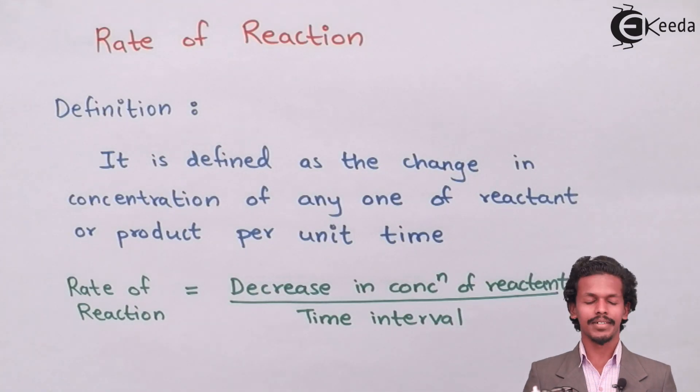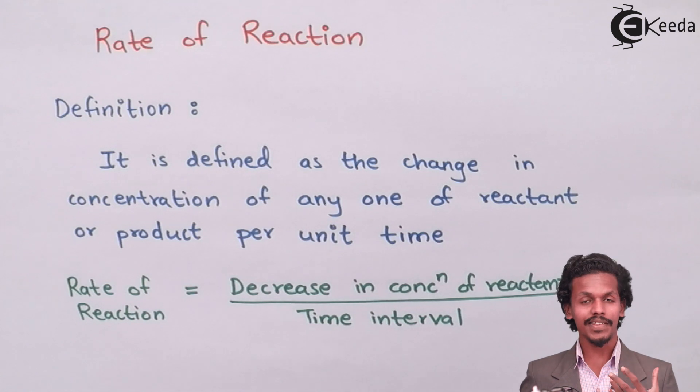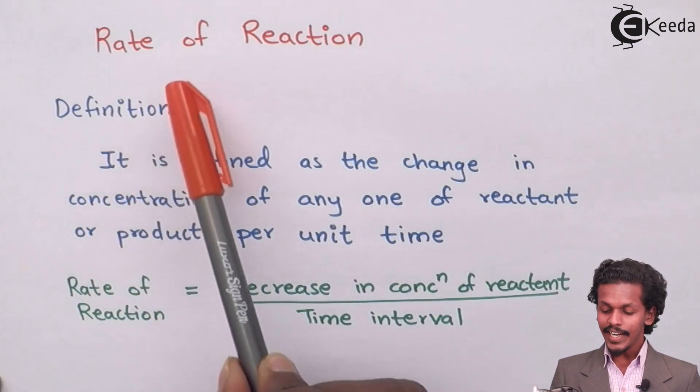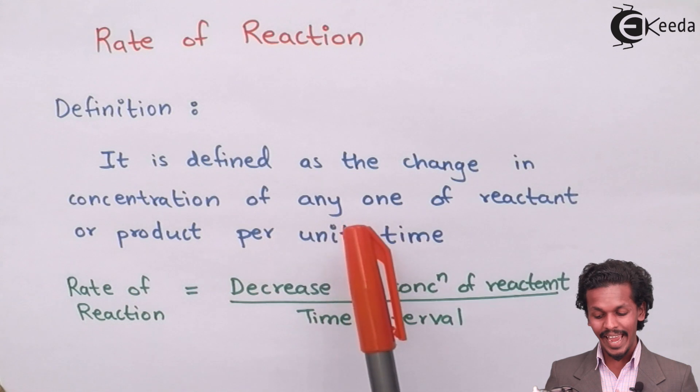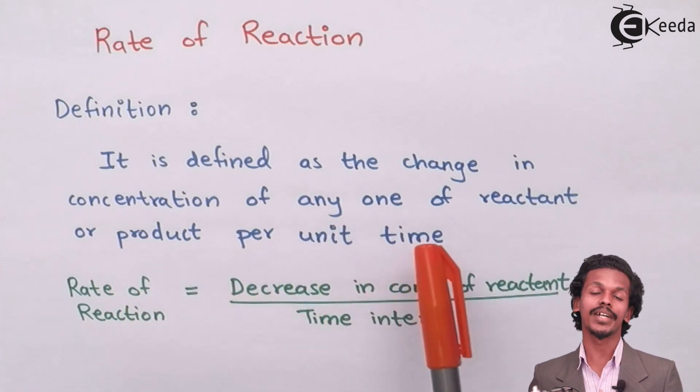Before understanding what is rate of reaction, we should know the definition of rate of reaction. The rate of reaction is defined as the change in concentration of any one of reactant or product per unit time.